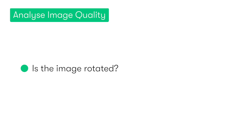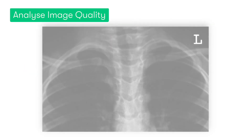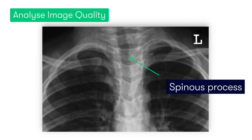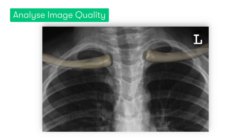We next want to check to see if the x-ray is rotated. To do this, we identify the spinous processes of the vertebrae and also the two heads of the clavicles. In a non-rotated chest x-ray, the spinous processes should sit neatly between the two clavicular heads. And here we can see that this is the case in our image, so we can say that our image isn't rotated.